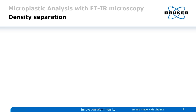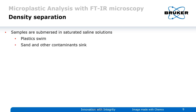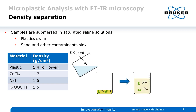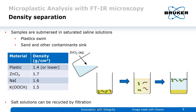For density separation: you submerge your samples in a saturated saline solution. In this case, the plastic floats while sand and other contaminants sink to the bottom. Plastic usually has a density of 1.4 or lower, which is why you use saturated solutions of zinc chloride, sodium iodide, or potassium formate. You stir the sample well, the sand sinks, the plastics swim, and you can pour it off. These salt solutions can be recycled by filtration, so you're not generating a lot of waste.